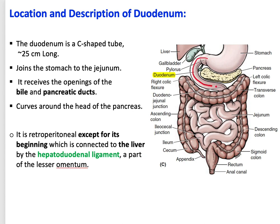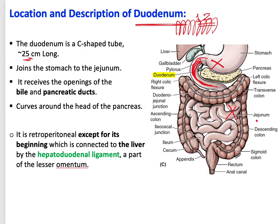The duodenum is C-shaped and about 25 centimeters long. In Greek, duodenum means 12, as they estimated its length as 12 finger-breadths, approximately 25 centimeters. The duodenum is the structure that connects the stomach to the jejunum. It receives an opening from the bile duct and also from the pancreatic duct. Inside its C-shape curve, there is a very important structure — the head of the pancreas.